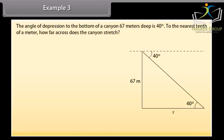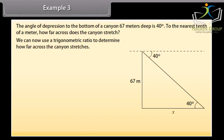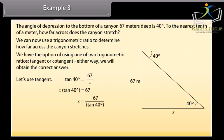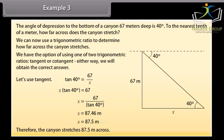Example 3: The angle of depression to the bottom of a canyon 67 meters deep is 40 degrees. To the nearest tenth of a meter, how far across does the canyon stretch? Again, start by drawing a diagram. Remember, the angle is 40 degrees from the horizontal. We can now use a trigonometric ratio to determine how far the canyon stretches. We have the option of using one of two trigonometric ratios, tangent or cotangent. Either way, we will obtain the correct answer. Let us use tangent. Tan 40 degrees equals 67 upon X. X into tan 40 degrees equals 67. X equals 67 upon tan 40 degrees. X equals 87.46 meter, which equals 87.5 meter. Therefore, the canyon stretches 87.5 meter across.